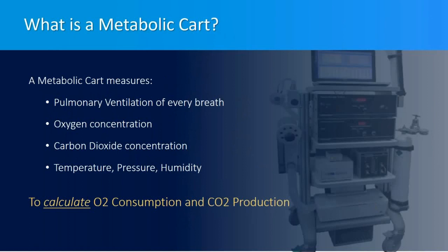A metabolic cart measures pulmonary ventilation of every breath, oxygen concentration (both inspiratory and expiratory), carbon dioxide concentration (both inspiratory and expiratory), and ambient temperature, pressure, and humidity. Temperature, pressure, and humidity are used to convert the metabolic data from atmospheric conditions to standard temperature, pressure, and dry conditions, or STPD. Finally, this measurement data is used to calculate oxygen consumption, CO2 production, and other metabolic data.